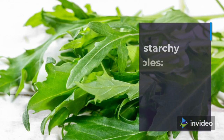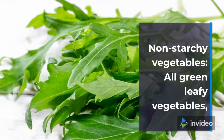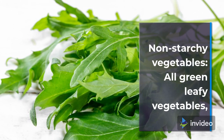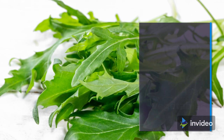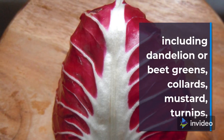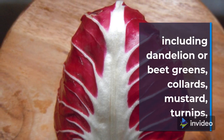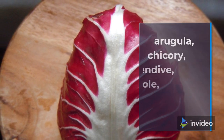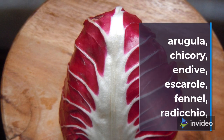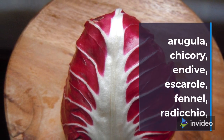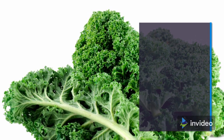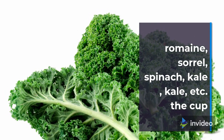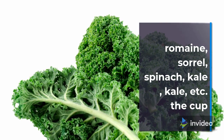Non-starchy vegetables: all green leafy vegetables, including dandelion or beet greens, collards, mustard, turnips, arugula, chicory, endive, escarole, fennel, radicchio, romaine, sorrel, spinach, kale, etc.